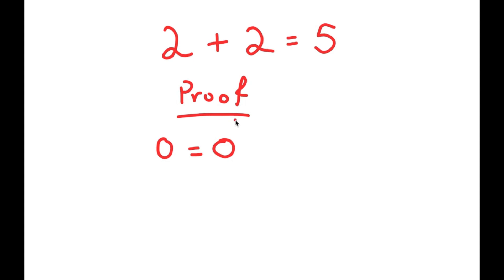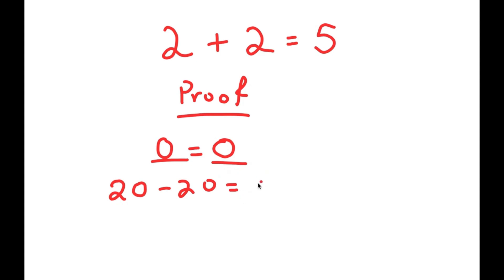From here, I'm going to rewrite 0 on my left-hand side as 20 minus 20 and rewrite the 0 on my right-hand side as 25 minus 25. So now I get 20 minus 20 is equal to 25 minus 25, which is again a true statement because 20 minus 20 is 0 and 25 minus 25 is also 0.